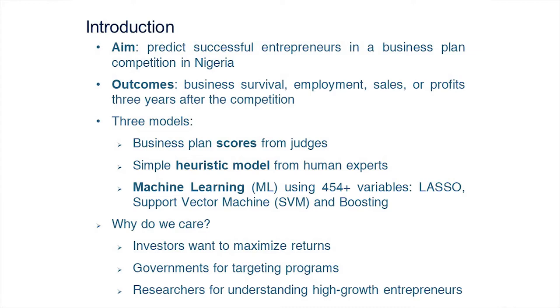The first approach is the typical World Bank model: have judges read business plans, give a score, and award money on that basis. The second uses simple heuristic models that economists might come up with. The third applies machine learning methods, starting with 450 variables, to come up with predictions of who's going to do well.